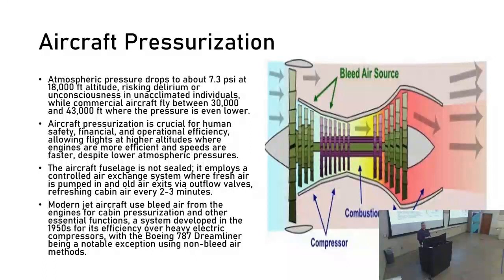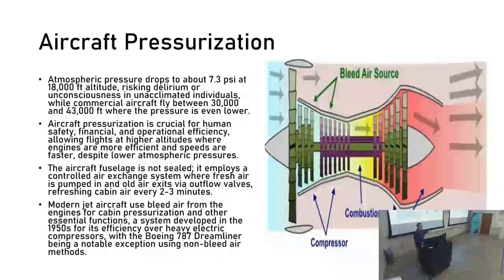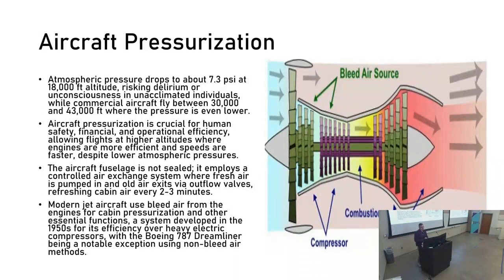The vast majority of aircraft do this by bleeding air from the compression section of their engines. If you look up here, the green section at the front — they're drawing in a huge amount of air. A portion of that air is bled into the pneumatic system and brought into the cabin. Typically, air would be basically brand new in your airplane every two to three minutes.